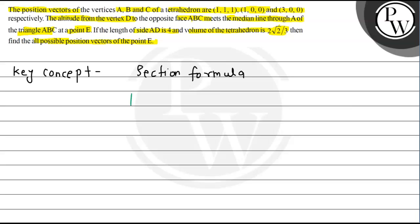Consider a line. If a point divides it internally in the ratio lambda to 1, with endpoints x1 and x2, the formula for the x-coordinate of the dividing point is lambda·x2 plus x1, all divided by lambda plus 1.